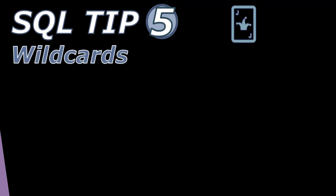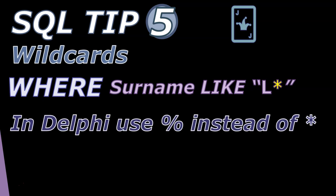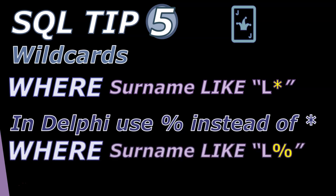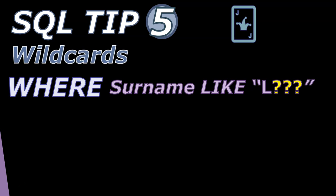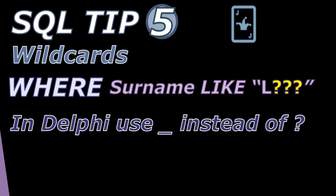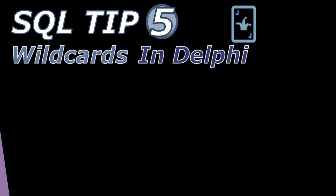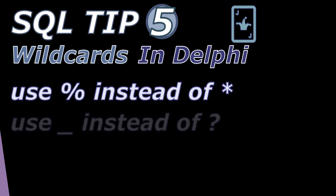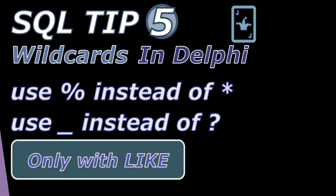Tip number five is when you are using wildcards. When using the LIKE feature, surname LIKE 'L*' means all surnames beginning with L — that's why we use the star. However in Delphi you cannot use the star; you must use the percentage sign: WHERE surname LIKE 'L%'. Another wildcard is the question mark, which replaces one character — so a surname four letters long beginning with L. In Delphi, use the underscore instead: WHERE surname LIKE 'L___'.